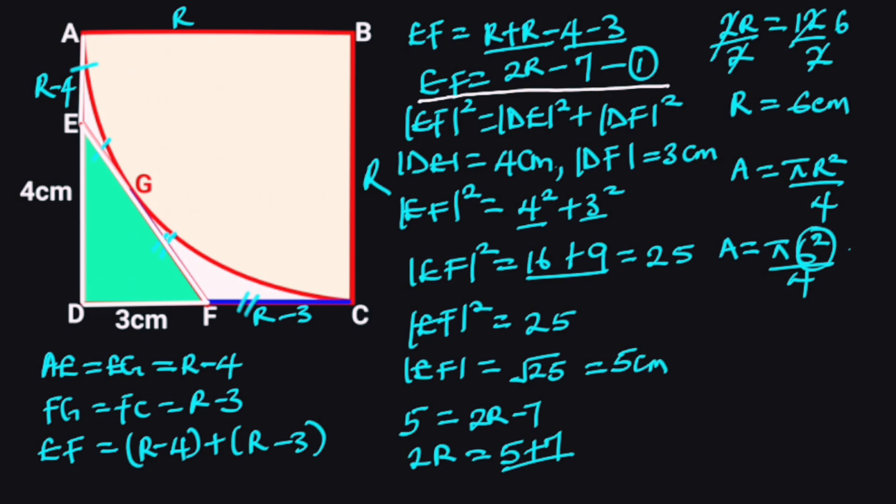6² is 36. 36 divided by 4 is 9. Hence, the area of the quarter circle is 9π. If we take π as 3.142, then the area will be 9 times 3.142, which is equal to 28.278 square centimeters.